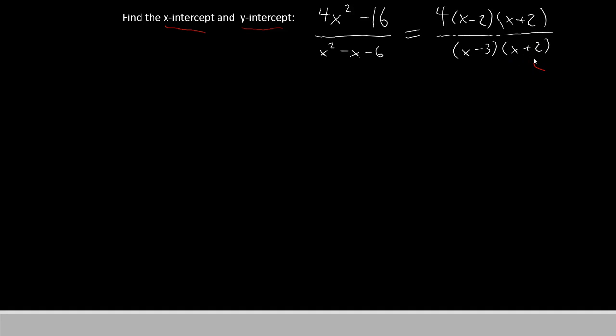Recall that the x plus 2 represented a hole in the function. I'm going to go ahead and cross those out now and cancel them out. We are not going to need that for this part of the problem. Let's find the x-intercept first.